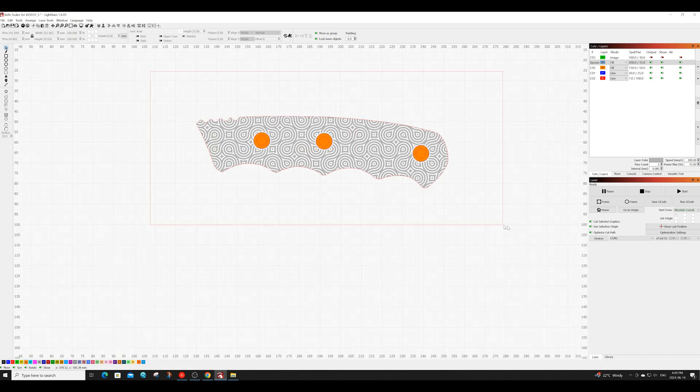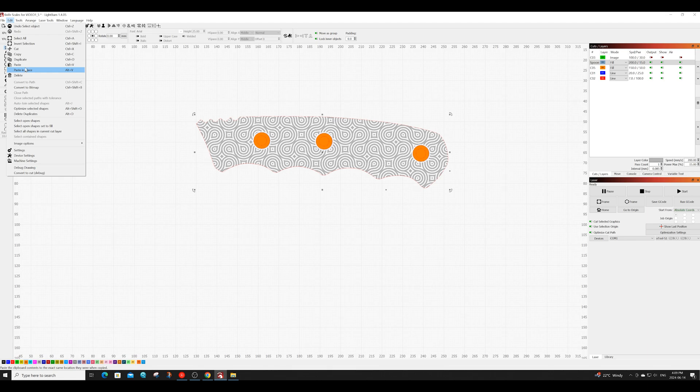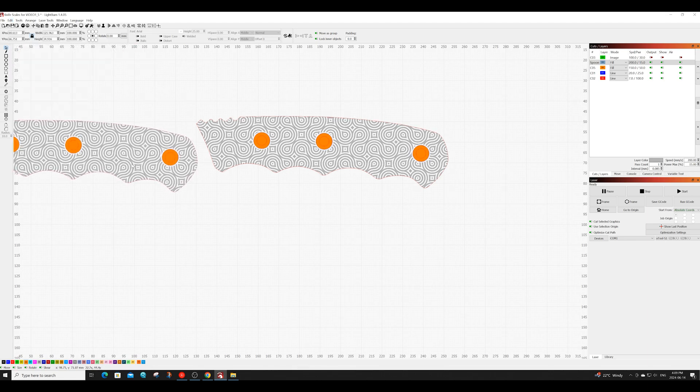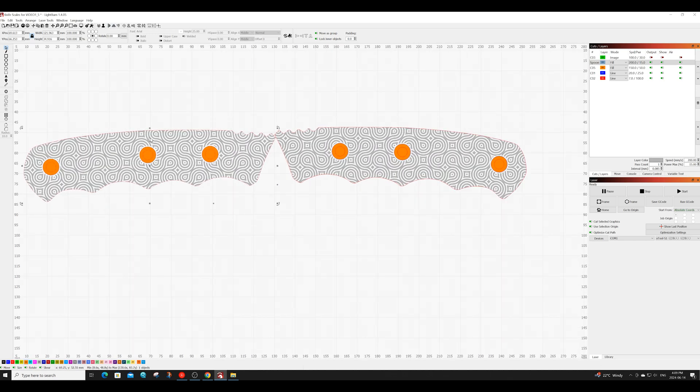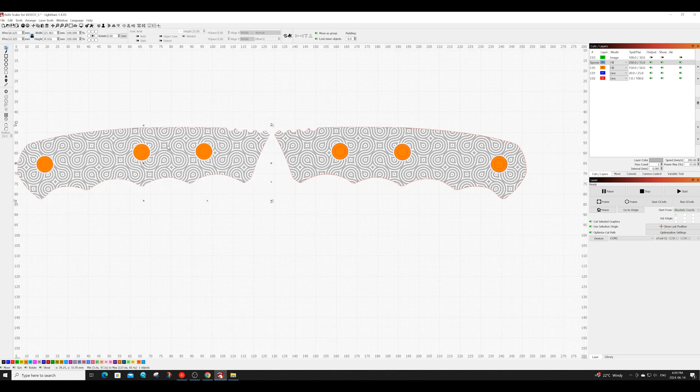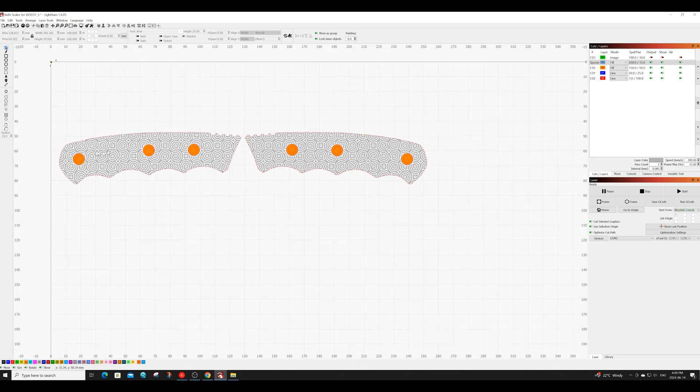So the next thing I'm going to do is select all the objects in this knife scale and group them together. Once they've been grouped, I'm going to make a copy of the scale. I'm going to select that copy I just made and using the mirror tool I'm going to flip it, creating a mirrored copy for the other side of the knife. Now that I have the scales for both sides of the knife designed, I'm going to cut these both out on plywood and do a test fit onto the knife to see how they fit.